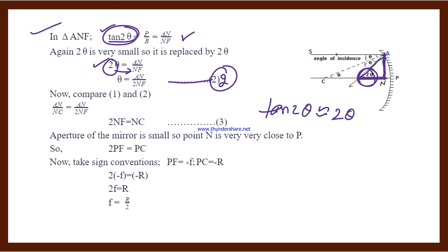Then we compare equations 1 and 2. Since both equal theta, we write AN divided by NC equals AN divided by 2 NF. AN cancels out. We get 2 NF equals NC. This is our equation number 3. Now we check our diagram. In the diagram, the N point and P point are very close. It means we write N as P.